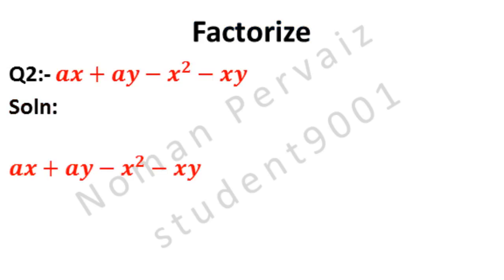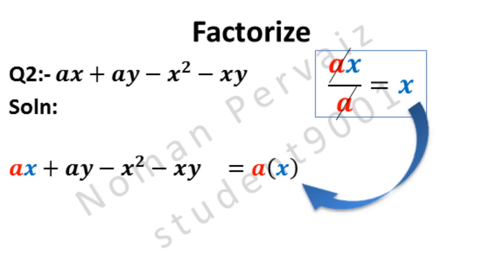We are taking the question as it is. Look at the first two terms — A is common, as highlighted in red color. A is taken as common. Since A is common, if we divide AX by A, then A is cancelled with A and X will be left only. This X is written in our solution. Plus comes as it is.